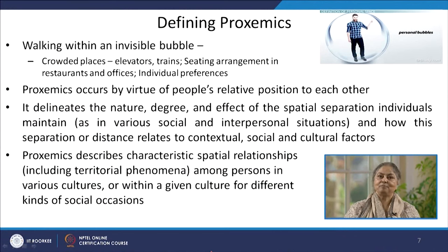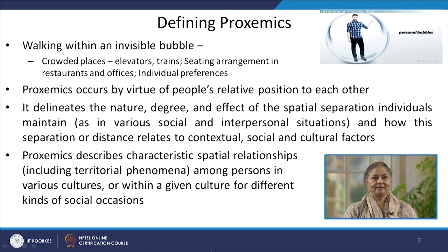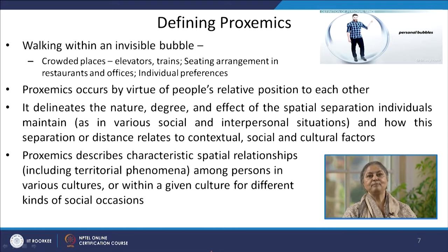Irrespective of gender and culture, if people intrude within our bubble and we cannot do anything about it, we develop a defense mechanism. In a crowded space with no friendly acquaintances, we try to create a make-believe sense that the invisible bubble is still protected. For example, in lifts we look at inanimate objects, avoid eye contact with others, look at lift buttons or floor numbers, or now prefer to look at the smartphone in hand. This avoidance of direct eye contact helps us feel we are keeping our invisible bubble intact.